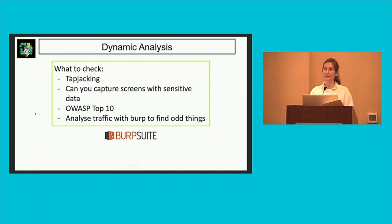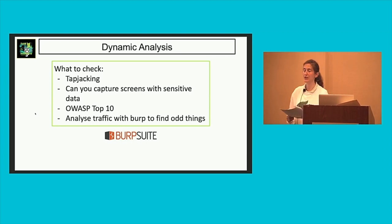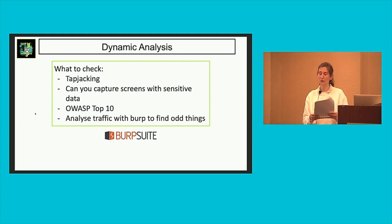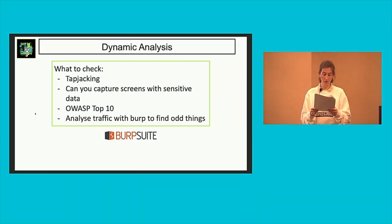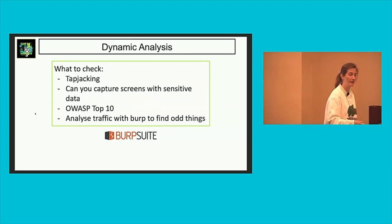Now for the dynamic analysis part. This is where we intercept traffic with Burp Suite and analyze it. We can check for tapjacking — the click-jacking equivalent for mobile apps. We also check: are you able to capture screens that contain sensitive data? And of course, check the OWASP Top 10, because all those vulnerabilities are also possible here. Let's see an example of a vulnerability.